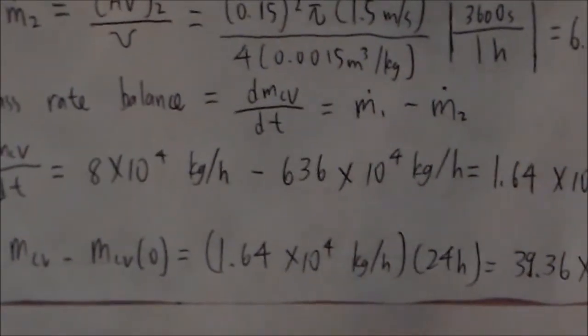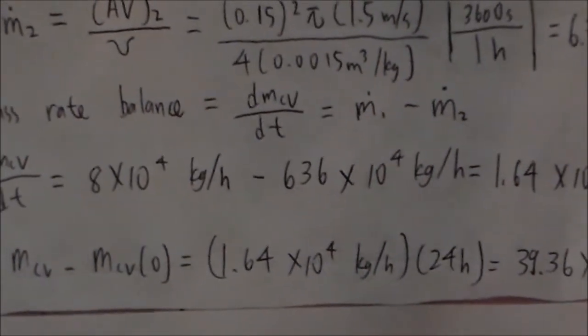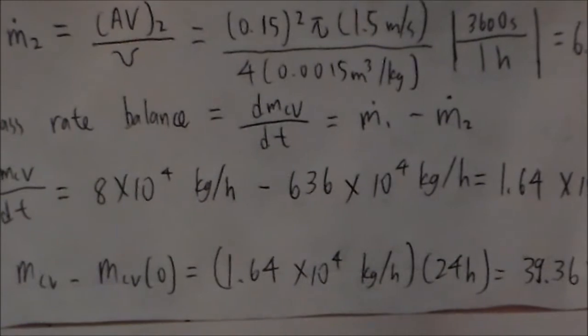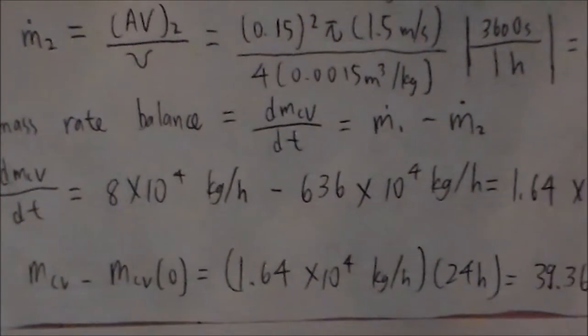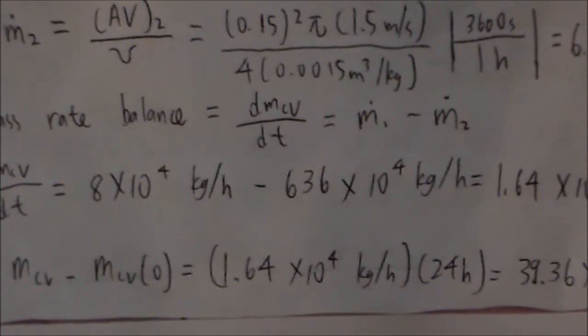The change in mass after 24 hours would be 1.64 times 10 to the 4 kilograms per hour times 24 hours, which is equal to 39.36 times 10 to the 4 kilograms.